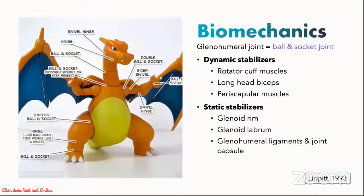The shoulder glenohumeral joint is a ball and socket joint. It has the greatest range of motion in any major articulation in the human body. The trade-off for this mobility is vulnerability to injuries and development of shoulder instability. Structures around and within the joint provide some form of stabilization. They can be divided into dynamic stabilizers, for example the rotator cuff muscles, and static stabilizers, for example the glenoid labrum.